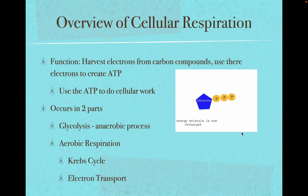This process occurs in two parts. They are called glycolysis, which is an anaerobic process and does not require any oxygen or any organelles — it happens in the cytoplasm — and aerobic respiration, if we're going to get the full value of glucose, which would include the Krebs cycle and electron transport.